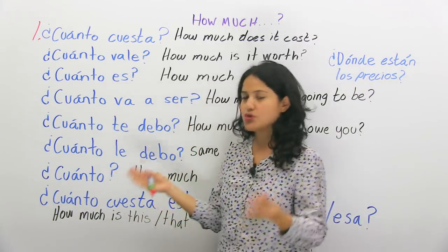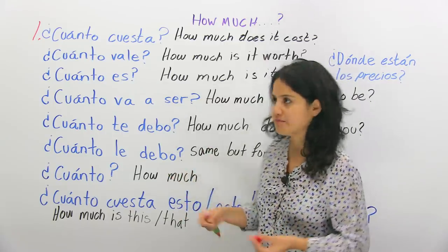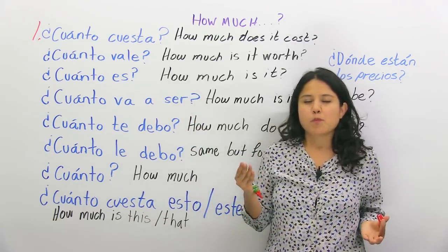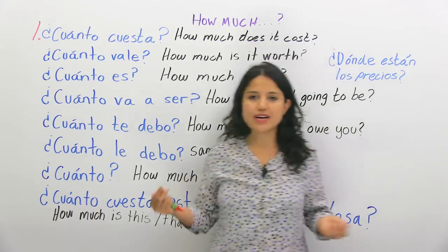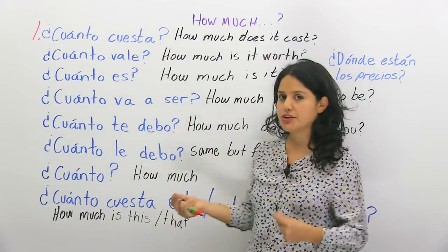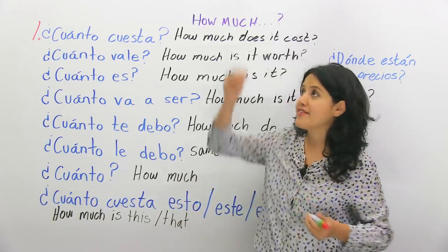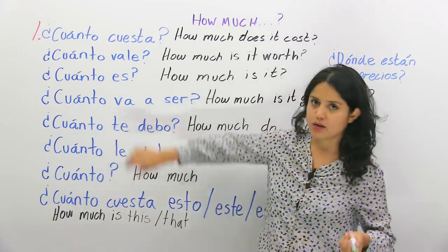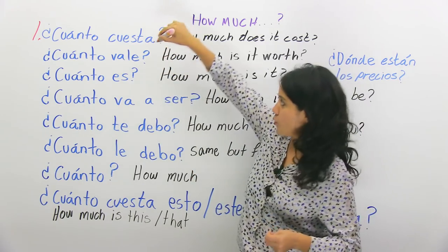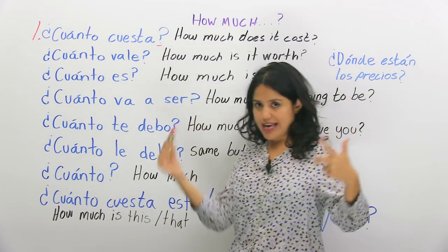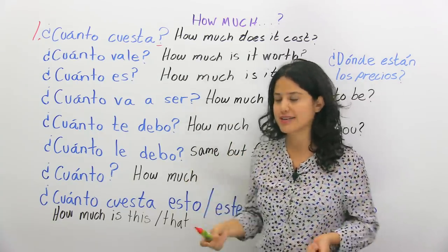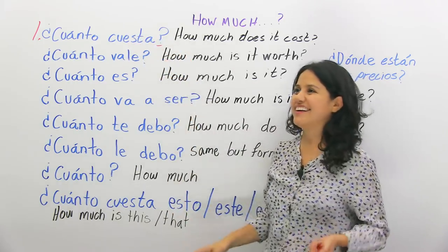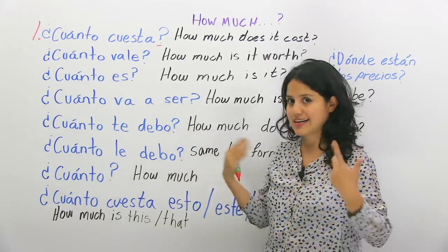¿Cuánto cuesta? That's the most common way to say 'How much does it cost?' It's a phrase you can use everywhere. You can say ¿Cuánto cuesta el reloj? ¿Cuánto cuesta la silla? ¿Cuánto cuesta la pizarra? ¿Cuánto cuesta el marcador? You say the name of the thing you're asking the price for. Very useful.